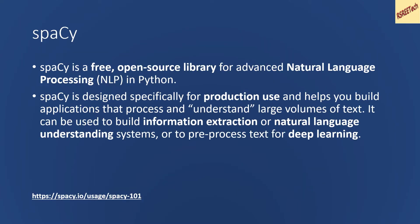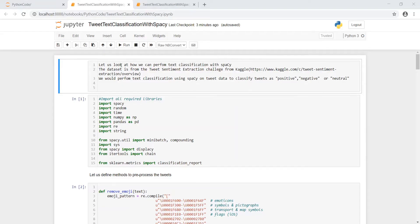spaCy is a free, open source library for advanced natural language processing in Python. spaCy is specifically designed for production use and it can be used to build information extraction systems, language understanding systems, or for pre-processing text for deep learning. I have put the link for spaCy in the description — you can go and check that out for any further information.